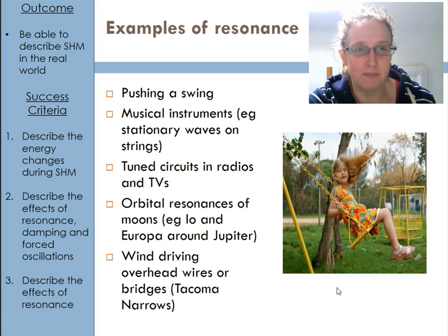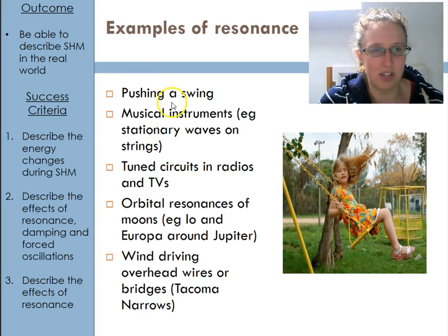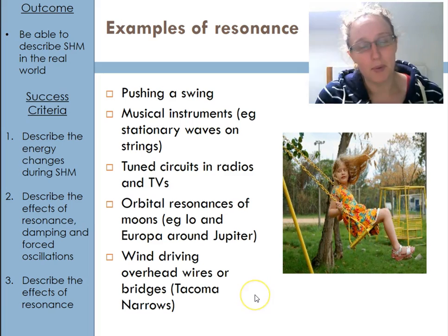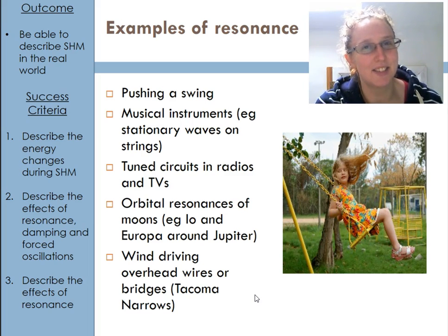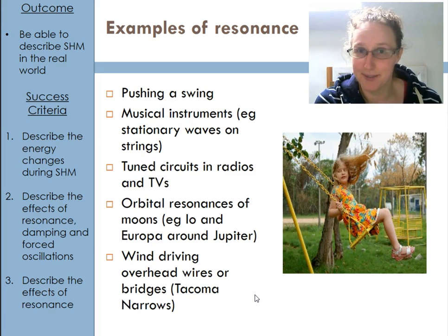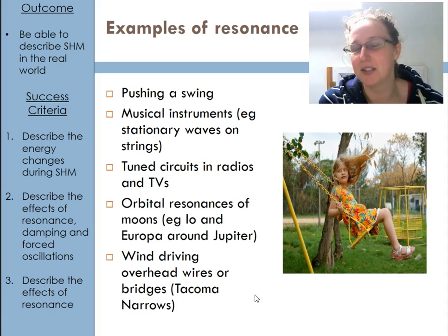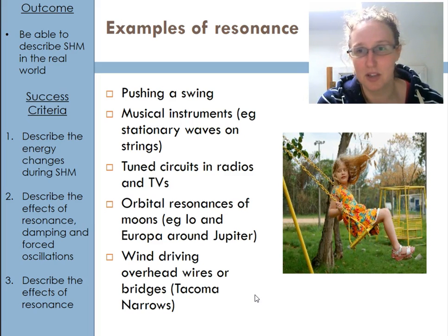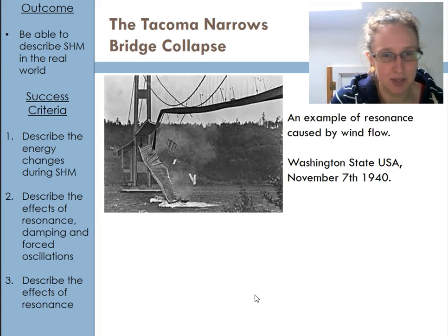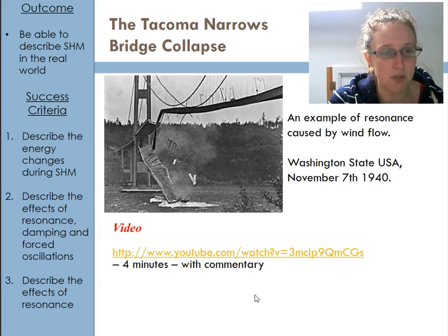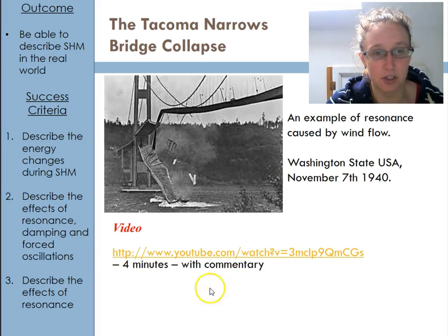Resonance isn't always a good thing. The best example of this is bridges, which have a tendency to collapse if vibrated in the wrong way — either from the wind or from other sources. The Tacoma Narrows Bridge is a classic case where the wind caused a resonance effect which then caused the bridge to collapse in 1940. There's a video of it — I'll put a link in the notes so you can watch it.